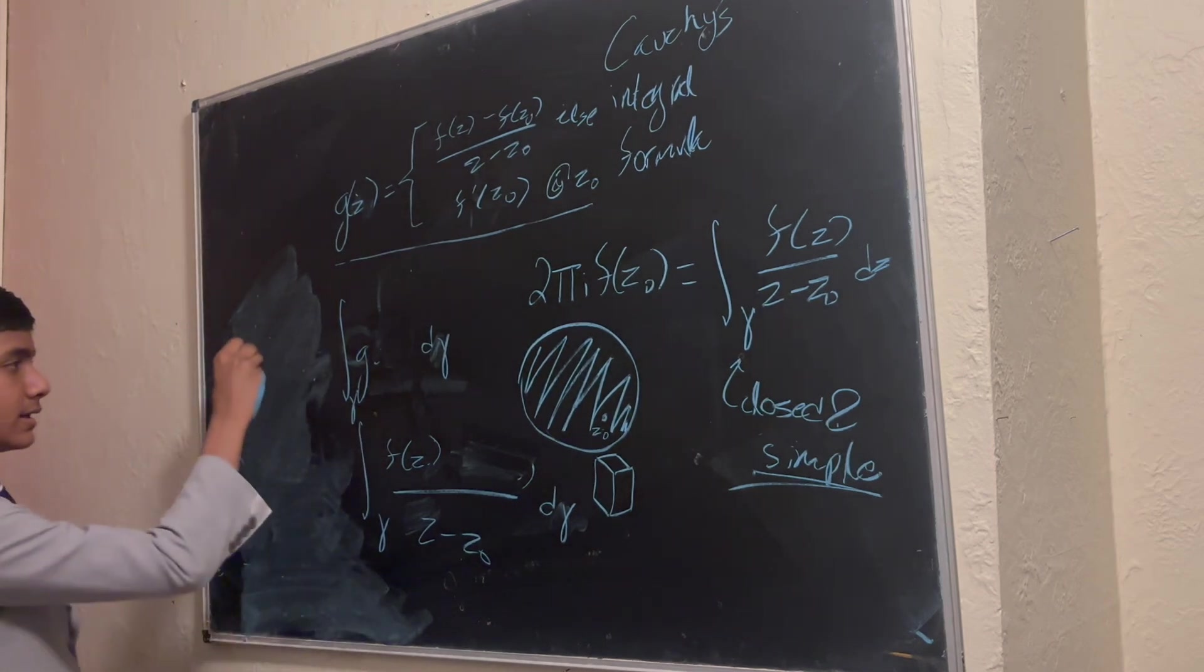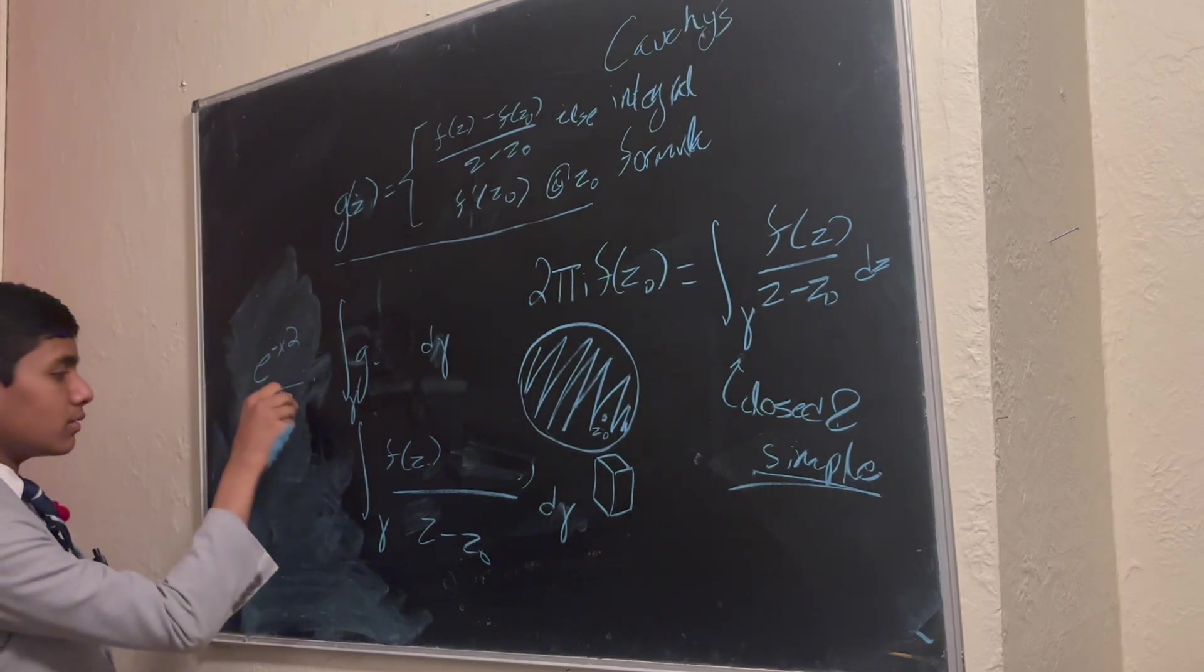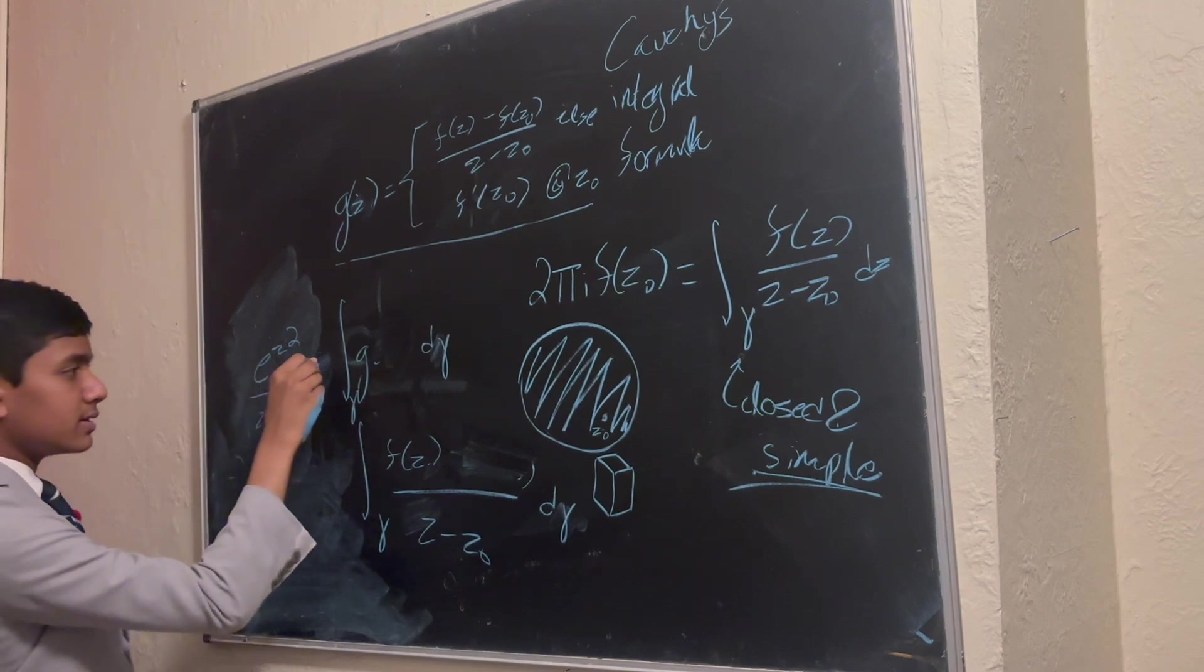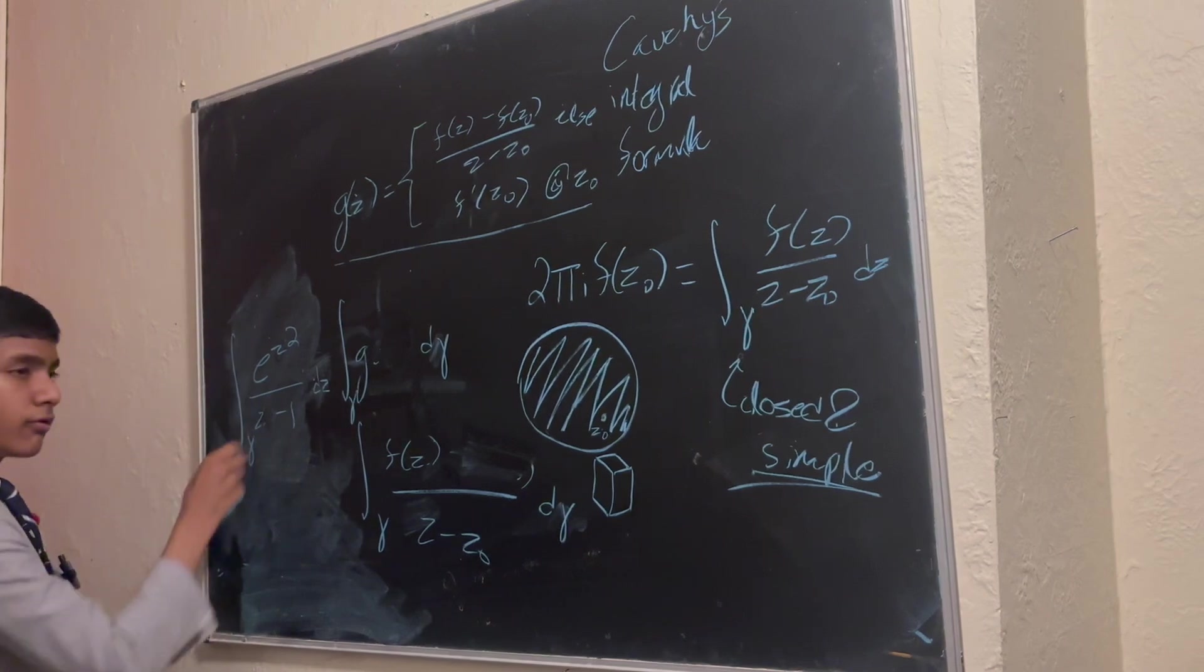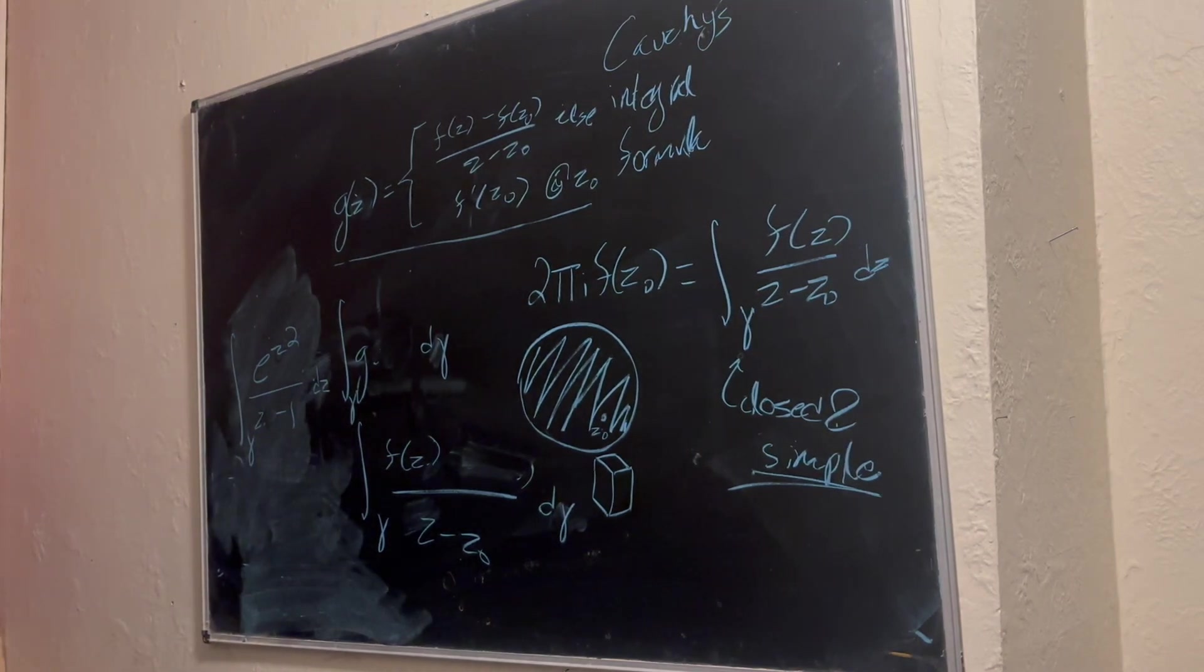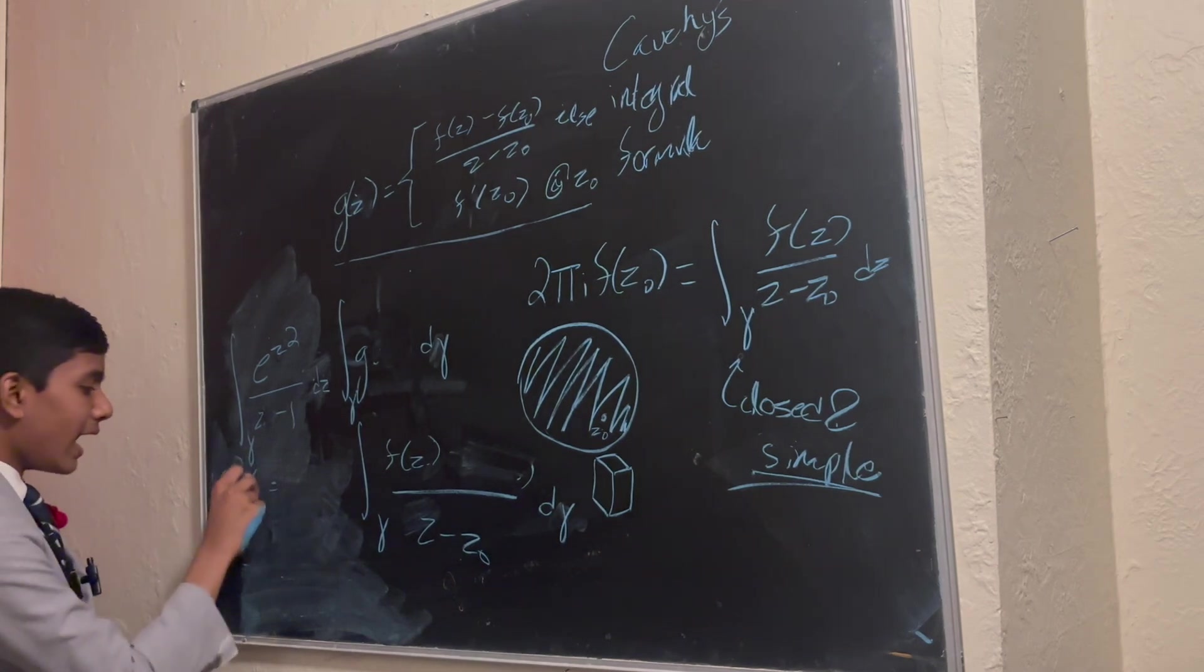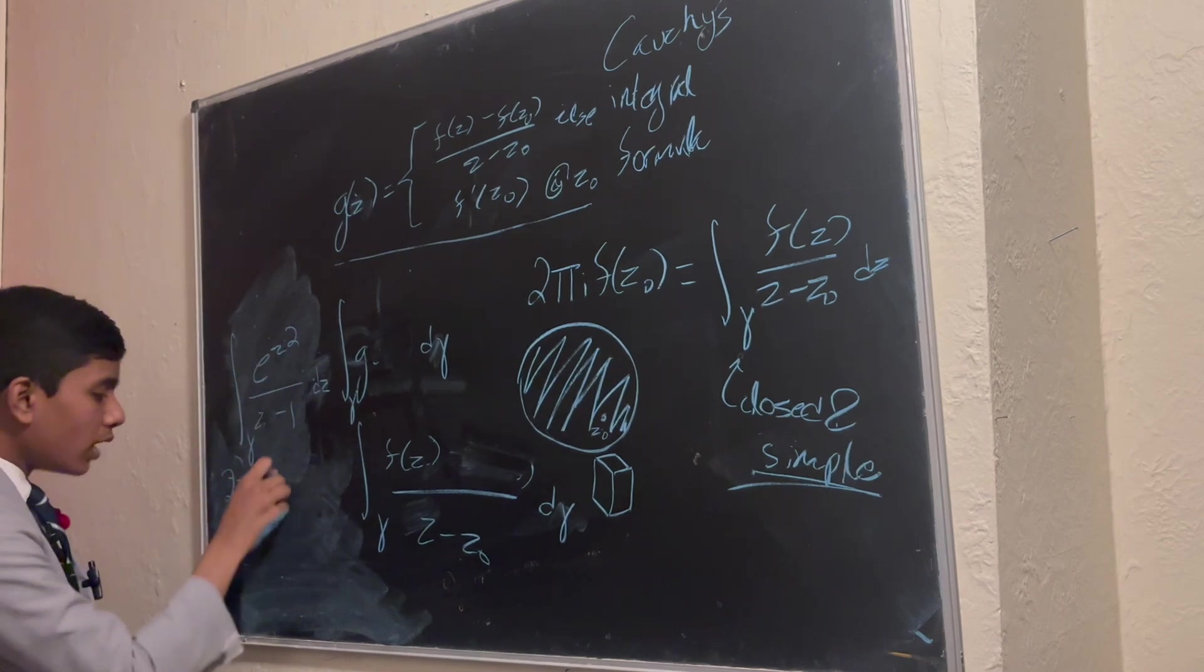Well, e to the minus x squared over x minus 1 now becomes e to the minus z squared over z minus 1 dz over this closed contour. And so, this is just equal to 2 pi i f, where f is e to the minus z squared, of 1.